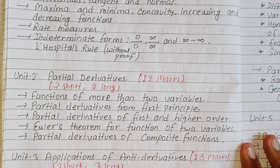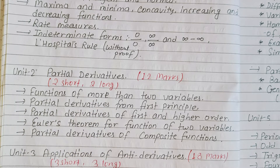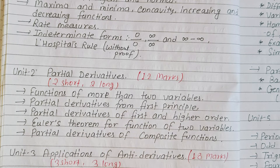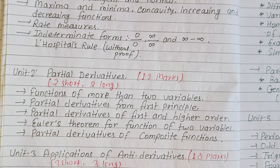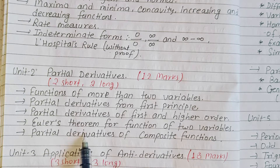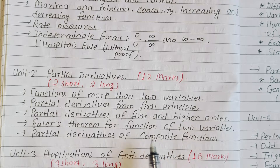You need to say it was partial derivatives — master is put on a slave assessment. Functions of more than two variables — very well. The partial derivatives from first principle, then partial derivatives of first and higher order. The Euler's theorem for functions of two variables — the proof is going to be pronounced with examples. Then partial derivatives of composite functions — this is always the chain rule.